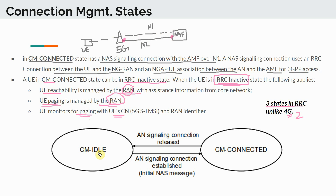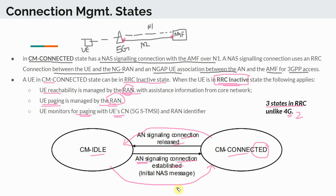To wrap up the connection management states: we have CM Idle and CM Connected, and the UE can transition between them. If the UE is in CM Idle and an access network signaling connection is established, it enters CM Connected mode. From connected mode, when the connection is released — for example due to inactivity after data transfer — it goes back to CM Idle. To return to connected mode, the UE performs the service request procedure.